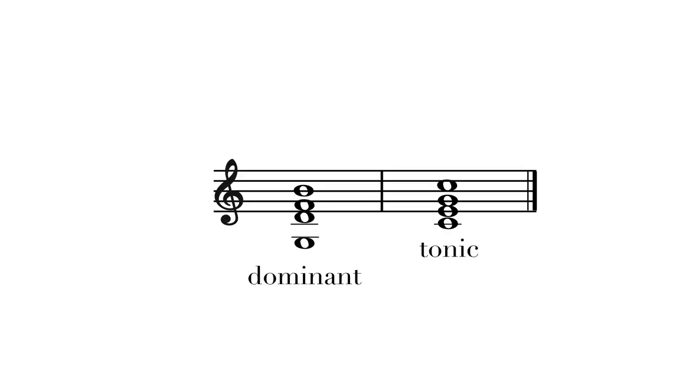By calling a key a major key, there's implied harmonic function. This harmonic function revolves around the relationship between tonic and dominant. The dominant has such a close relationship with tonic because of the leading tone — Ti really wants to go to Do; V really wants to go to I.